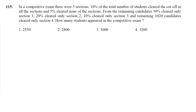Let's have a look at question number 115. In a competitive exam, there are five sections. 10% of students cleared the cutoff in all the sections and 5% cleared in none of the sections. From the remaining candidates, 30% cleared only section 1, and so on.